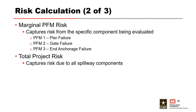We'll be calculating the marginal risk for each potential failure mode and the total project risk. The marginal PFM risk captures the probability of failure only from the specific component being evaluated. For this example, we have three PFMs: PFM 1 is pier failure, PFM 2 is gate failure, and PFM 3 is end anchorage failure. When calculating the total risk, we need to capture the probability of failure due to all of the components.